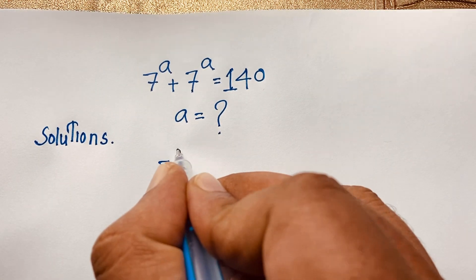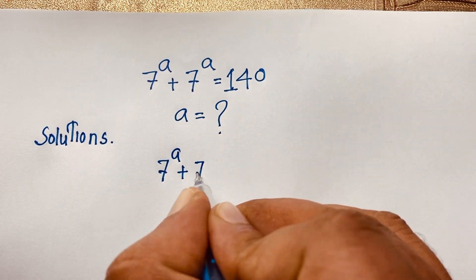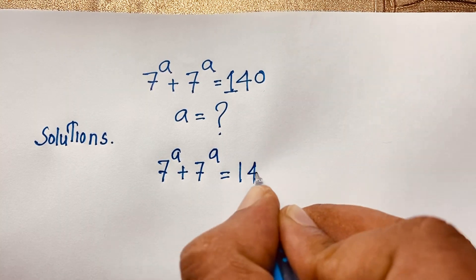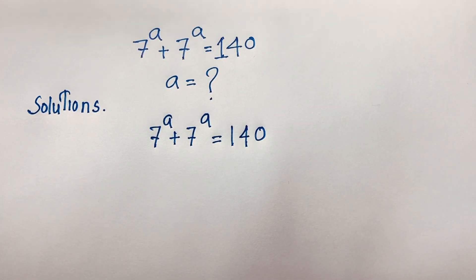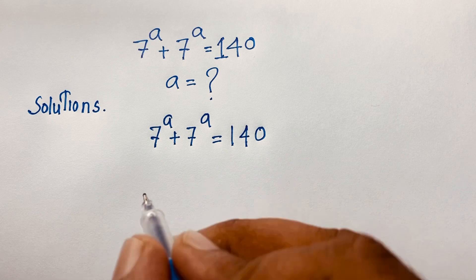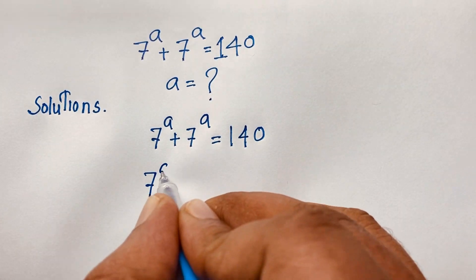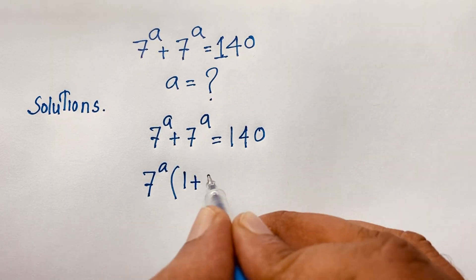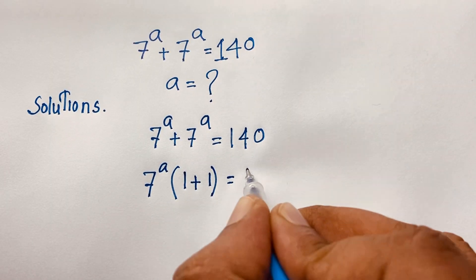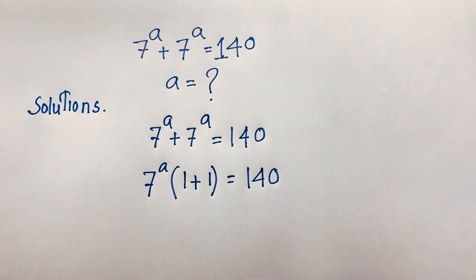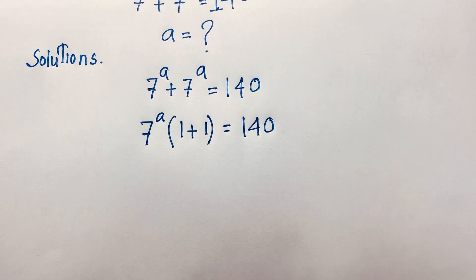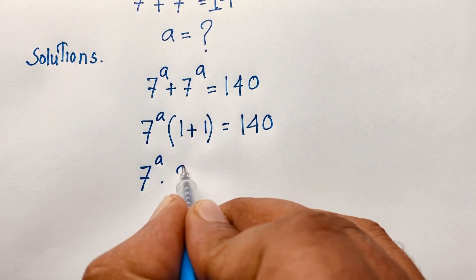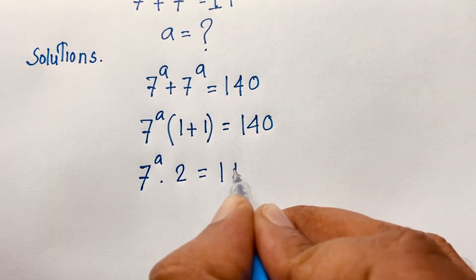Our question: 7 to the power a plus 7 to the power a is equal to 140. You can see here 7 to the power a is common. Dividing, it will be 1 plus 1 is equal to 140. So 7 to the power a times (1 plus 1), it will be 2, is equal to 140.